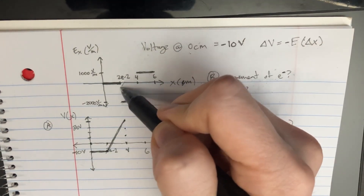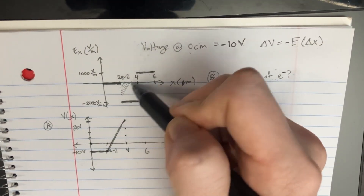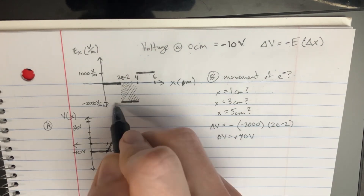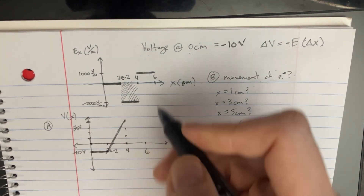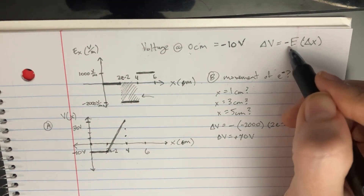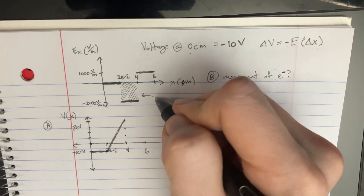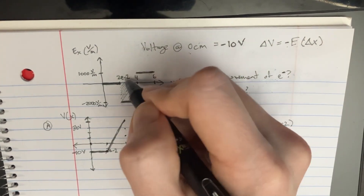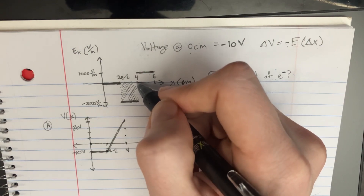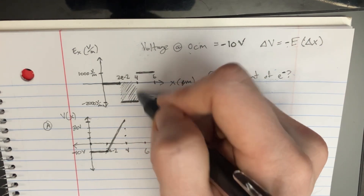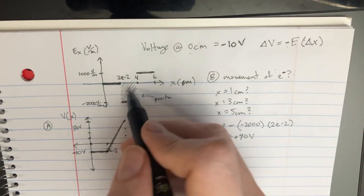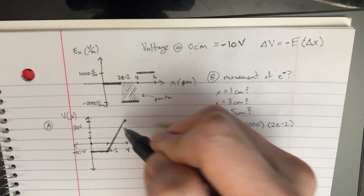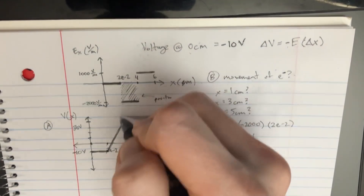You can also tell that if you were to take the area under this curve and multiply — remember that this is supposed to be the opposite because of that sign, so technically this is going to be positive area. If you multiply the 2 centimeters by the 2,000, it's making a square box, so you're moving up 40, which takes you to 30 volts.